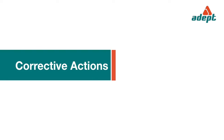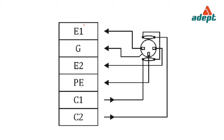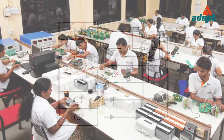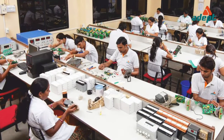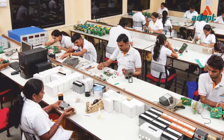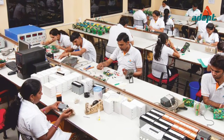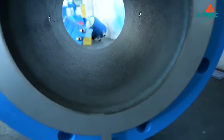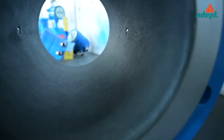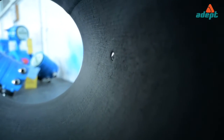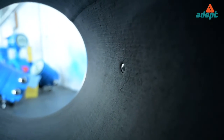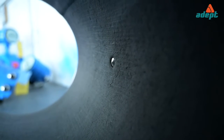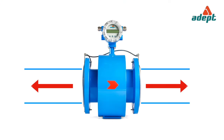Corrective actions: disconnect E1, E2, and G at the transmitter and short them together. If the indication is still non-zero, send the transmitter to the factory. Otherwise, isolate and remove the flow tube, remove any deposit on and around the electrodes and check.